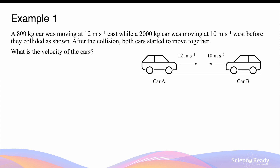Suppose we have an 800 kg car moving at 12 m/s to the east, while we have a 2000 kg car moving at 10 m/s to the west, so they're traveling in opposite directions, before they collided as shown. After the collision, both cars started to move together. What is the velocity of the cars? Assuming in this example there's no friction between the road and the tyres of the car, we have a system where there are no external forces acting on the cars.